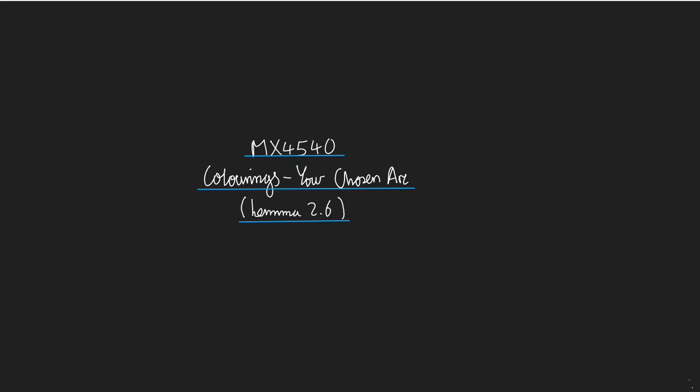Welcome to a mini-lecture about colourings and your chosen arc. The idea of the lemma I'm going to present to you just now is that it says that if there is a colouring of your link, then you can assume that the colouring has this label on this arc. It's very useful for narrowing down the possibilities of colourings if they exist.